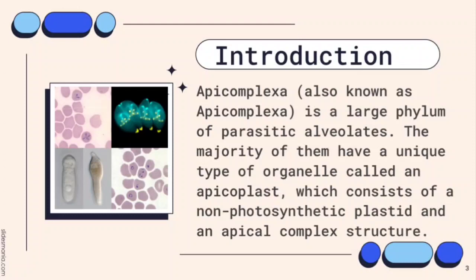The apicoplast consists of a non-photosynthetic plastid and an apical complex structure. The Apicomplexa are a monophyletic group composed almost entirely of parasitic, with no free-living species. Apicomplexa, along with ciliates and dinoflagellates, form a higher-order group known as Alveolata.